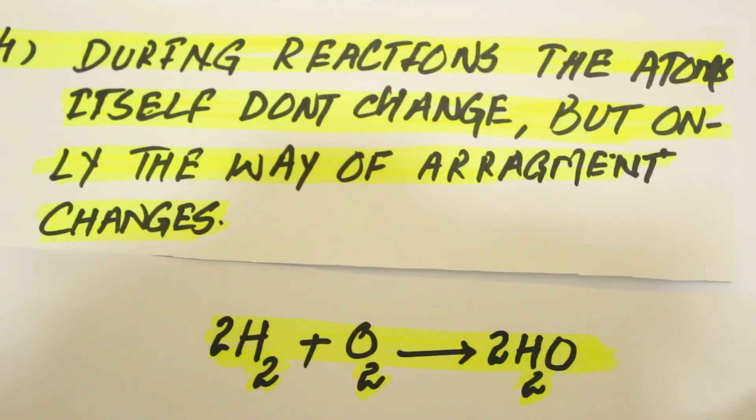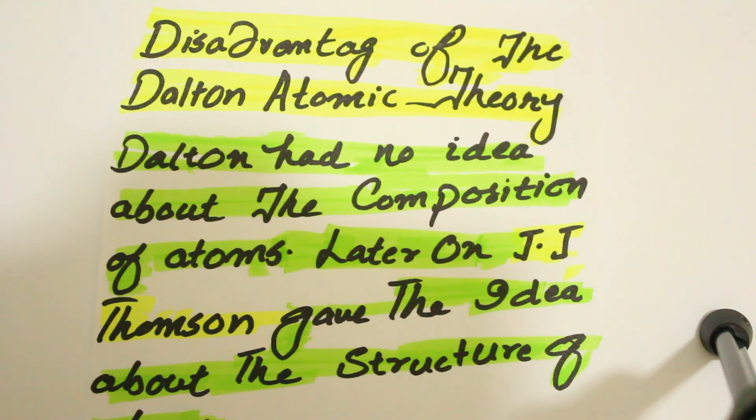The last point of Dalton's Atomic Theory is that during any chemical reaction, the atom itself doesn't change, but it's only the way of arrangement which changes. For example, in this case, two moles of hydrogen gas react with one mole of oxygen and it gives us two moles of water. Here you can see that the atoms themselves don't change, but it's only the arrangement in the product side which changes.